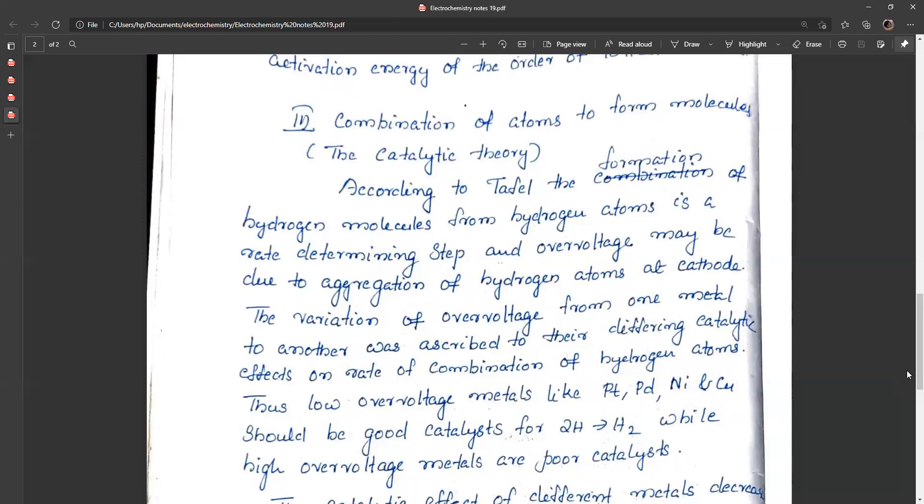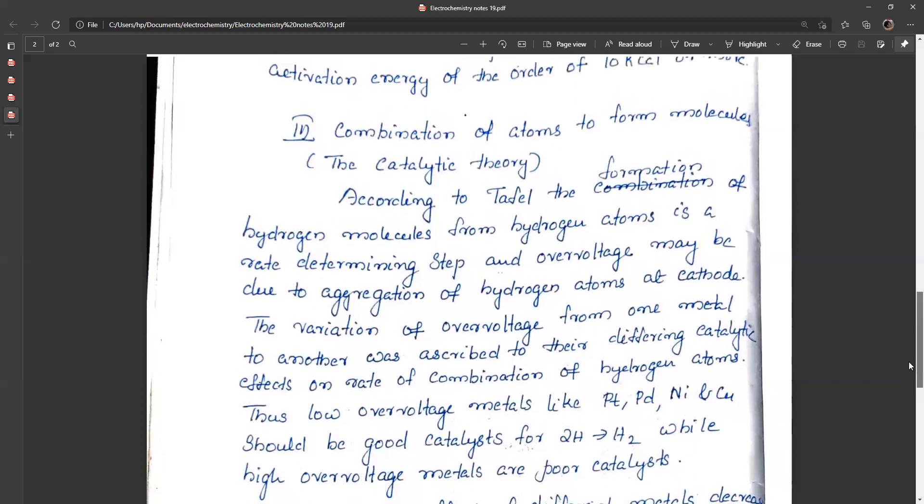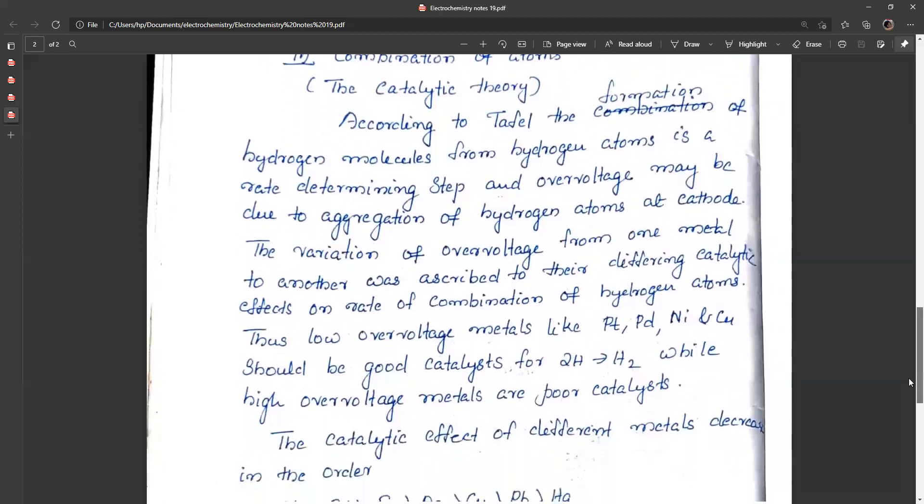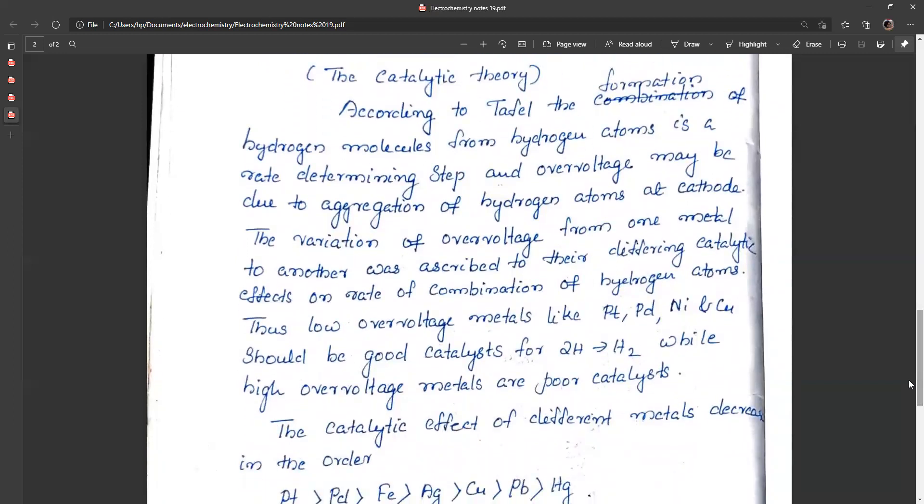We know that in the catalytic process where two hydrogen atoms combine to form hydrogen molecules, platinum, palladium, nickel, and copper are found to be good catalysts. These are low overvoltage metals, while high overvoltage metals are found to be poor catalysts in the same process of 2H to H2. This is one proof for this theory.